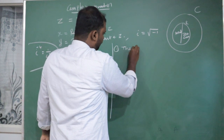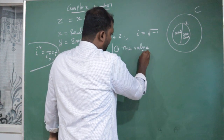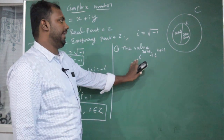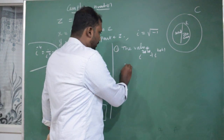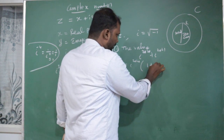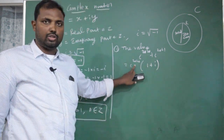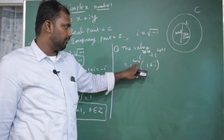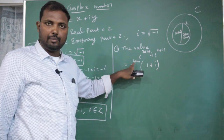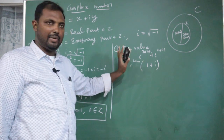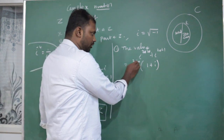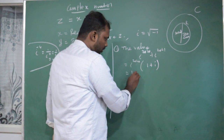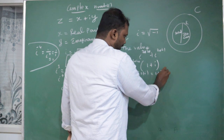Now a question: find i to the power 2020 plus i to the power 2021. We can write this as i to the power 2020 plus i to the power 2020 times i. Now i to the power 2020: since 2020 is a multiple of 4 (last two digits 20 are divisible by 4), its value is 1. So the answer is 1 plus i.